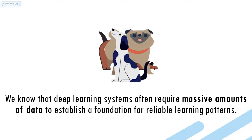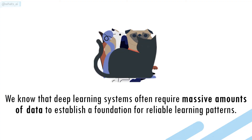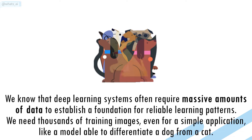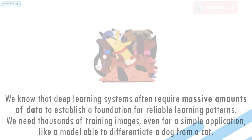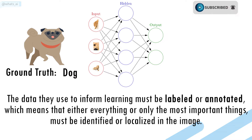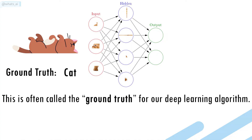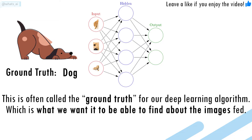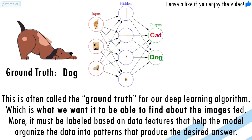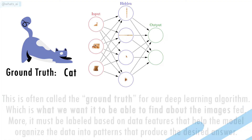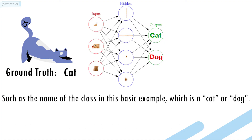We know that deep learning systems often require massive amounts of data to establish a foundation for reliable learning patterns. We need thousands of training images even for a simple application, like a model able to differentiate a dog from a cat. The data they use to inform learning must be labeled or annotated, which means that either everything or only the most important things must be identified or localized in the image. This is often called the ground truth for our deep learning algorithm. It must be labeled based on data features that help the model organize the data into patterns that produce the desired answer, such as the name of the class — a cat or a dog.